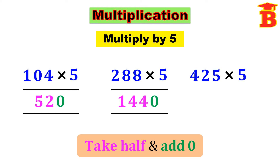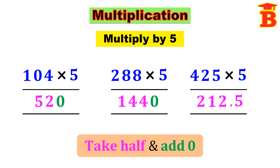Next we can multiply 425 into 5. Here also we follow the same method: take half of this number and then add 0. Taking half of 425 we get 212.5. Next step, add 0 at the back — that means multiply by 10. When we multiply by 10 we can remove one decimal point. So removing the decimal point, we get the answer 2125.